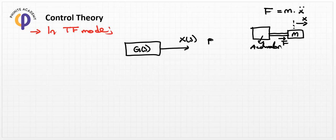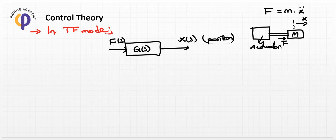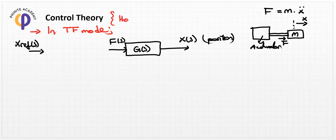In the transfer function mode, we have the output variable as the position value in our notation. In order to activate this system, the input is called the force variable — we apply force to the system and get a position deflection. If we want to track a reference position x_ref(s) in our system, the main question of control theory is: how can we calculate the correct force value?